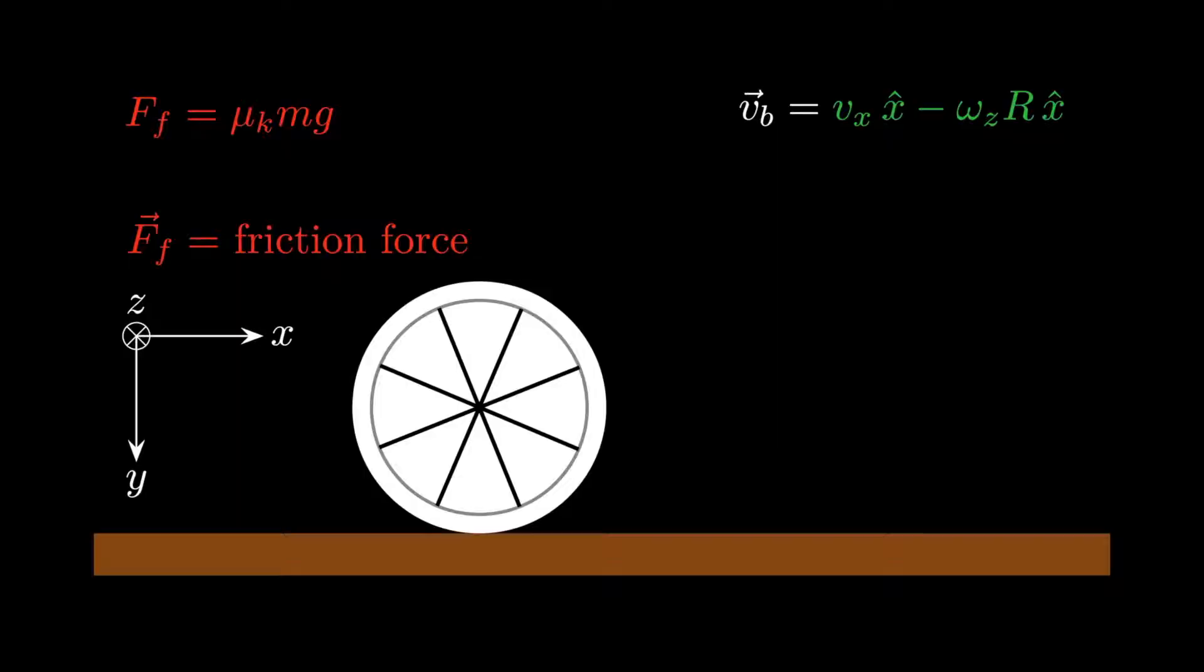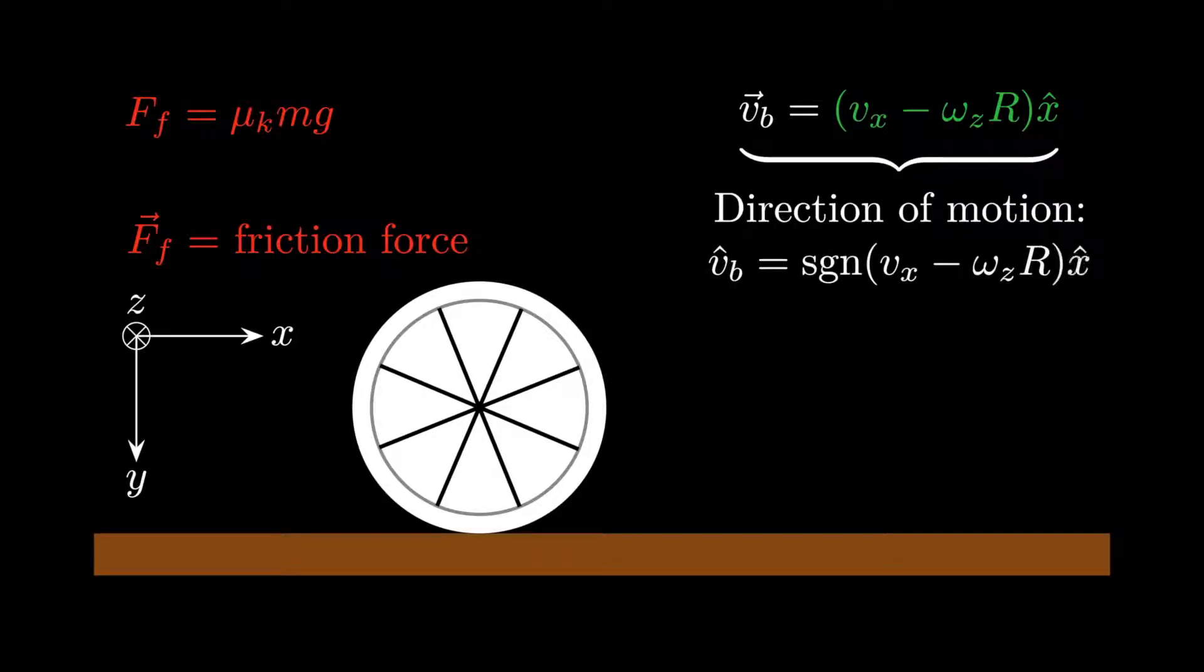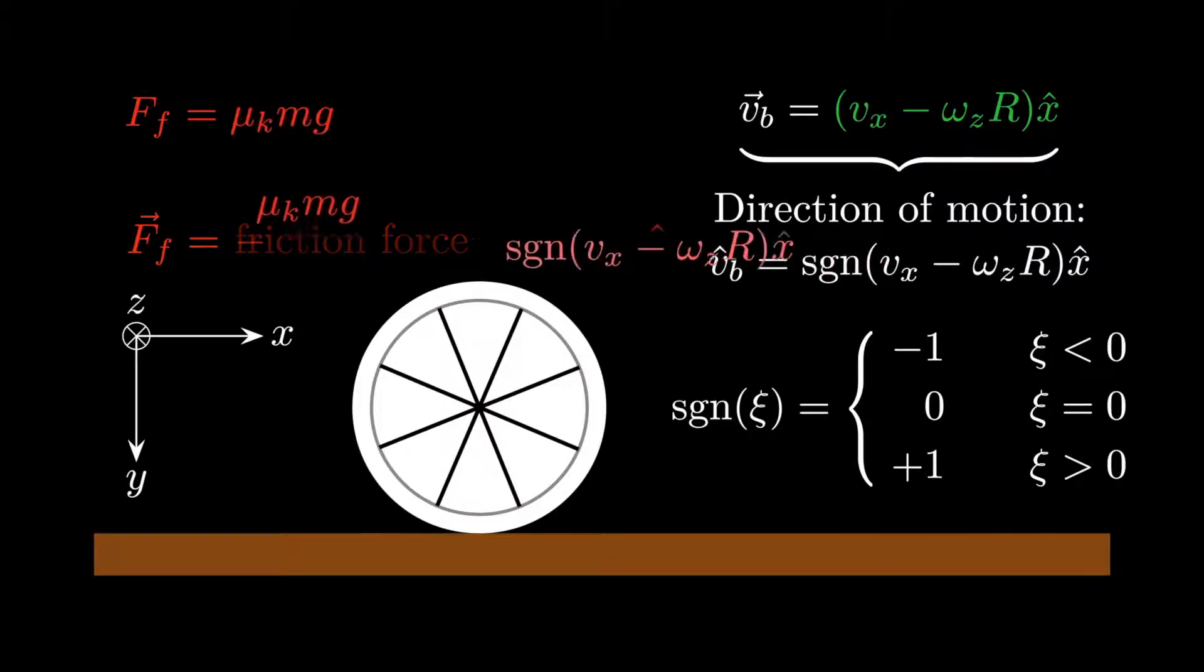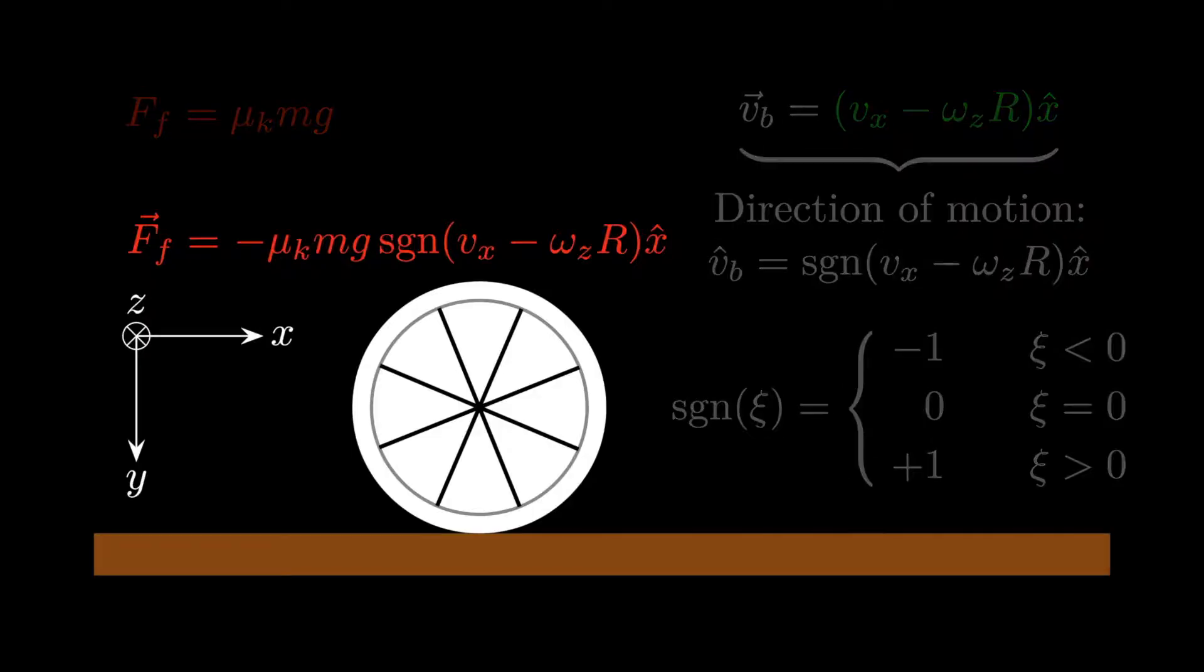Combining these velocities gives the velocity of the point at the bottom of the object when undergoing both translational and rotational motion. Now, our goal is to determine the friction force, which opposes the direction of motion. To get this direction, we divide the velocity by its magnitude, which, in one dimension, can be written with the help of the sign function. The sign function simply returns the sign of its argument, plus one if the argument is positive, minus one if the argument is negative, and zero if the argument happens to be zero. Finally, now that we know the direction of motion, we can write down an expression for the friction force.